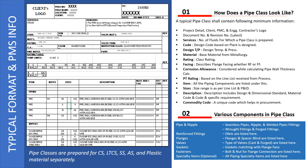Then there is basic information related to services — that particular pipe class is related to certain fluids for a particular project. The number of fluids for which the pipe class is prepared will always be listed. For example, for this particular pipe class it is for steam service, and if it is for hydrogen, nitrogen, or any other fluid service, that will be mentioned here.